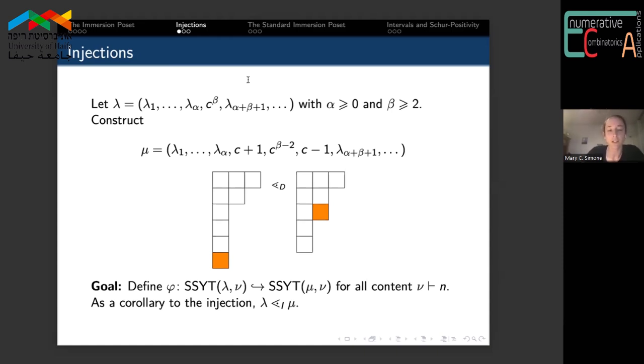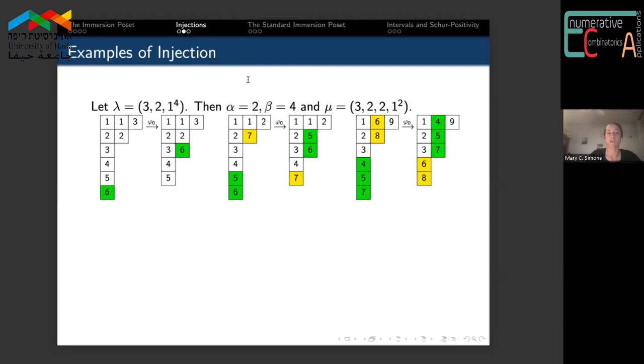Automatically, λ is covered by μ in dominance order. Our goal is to define an injection between semi-standard Young tableaux of shape λ and content ν into semi-standard Young tableaux of shape μ and content ν that works for all possible content ν. As a corollary, λ is then covered by μ in the immersion poset.